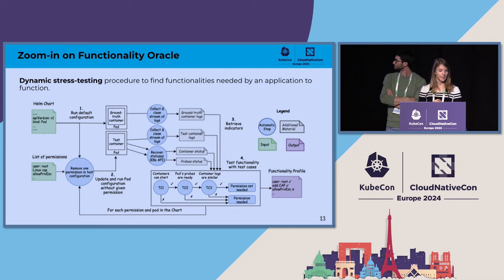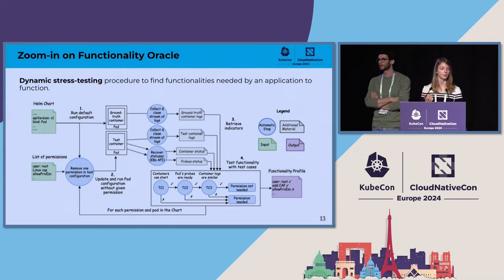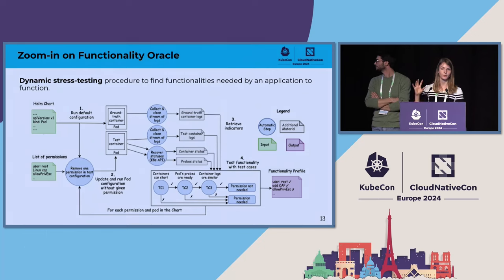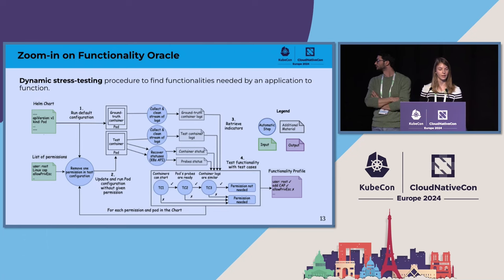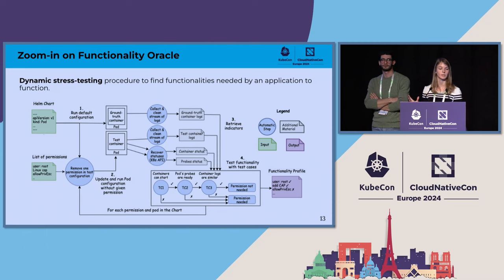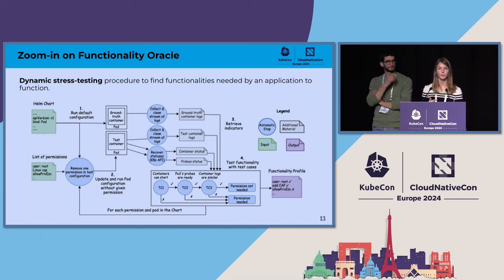In parallel, we consider a list of permissions outputted and recommended by checker tools — for example, a recommendation to set the user as non-root, to remove a given Linux capability, or to disallow privilege escalation. The second step is to update and run the pod configuration without one given permission — for example, setting the user as non-root. During step three, I recover indicators linked to the ground truth containers and the test containers.